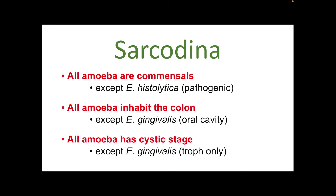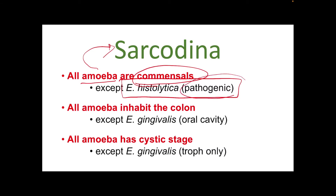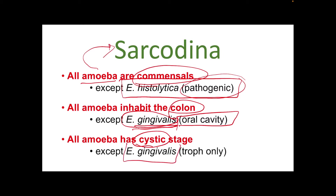There are rules to remember for Sarcodina: All amoeba are commensals — non-pathogenic and don't cause disease — except one, which is Entamoeba histolytica, which is pathogenic. All amoeba inhabit the colon or large intestine, except Entamoeba gingivalis, which lives in the oral cavity. All amoeba have a cyst stage, but E. gingivalis doesn't have one — it only has trophozoites. Memorizing these rules makes it easier to learn the other types of amoeba.